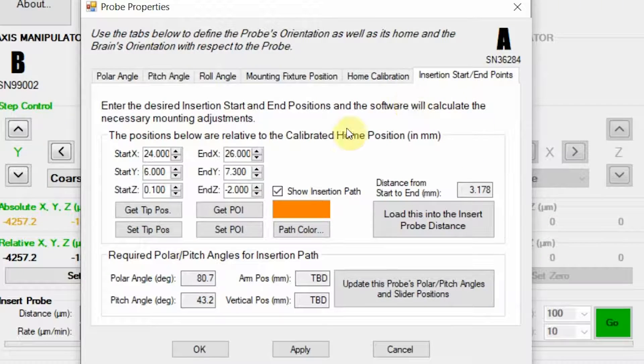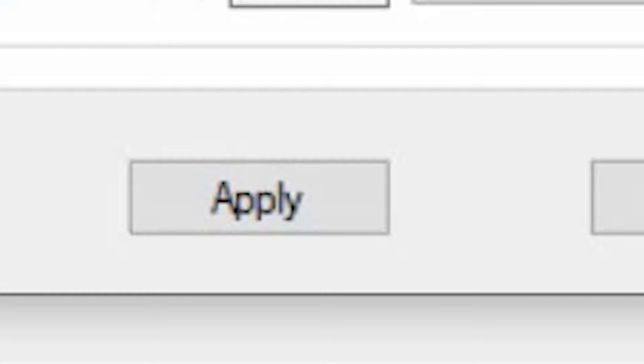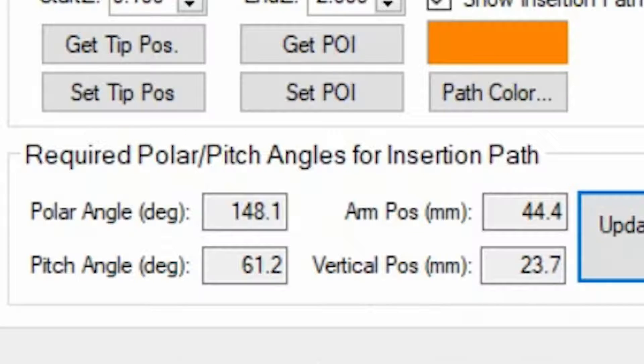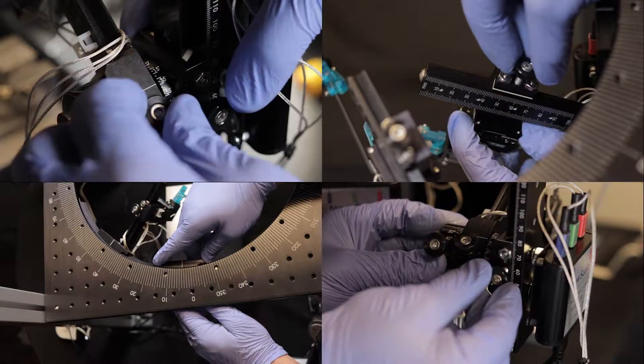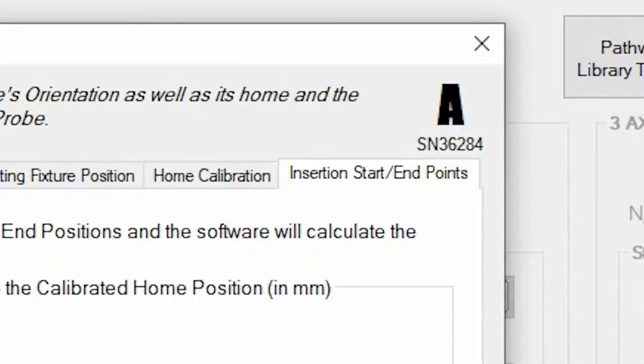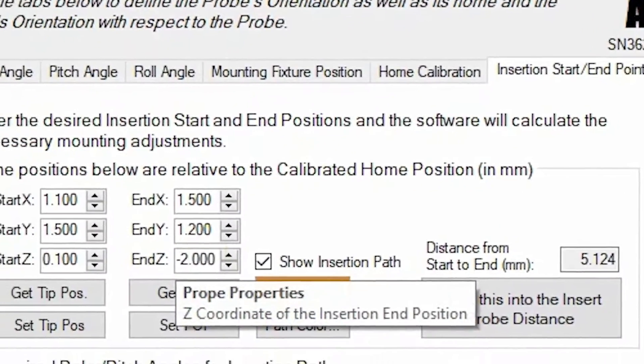Once the system is calibrated, you can indicate the brain atlas start and ending points you wish to reach. The program will then calculate the NPM arm position attributes required to reach the correct probe trajectory. You can then manually set these attributes on your NPM system. Unique start and end points can be set for each probe.